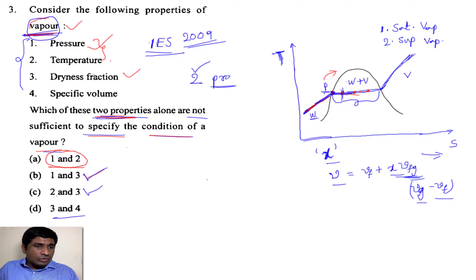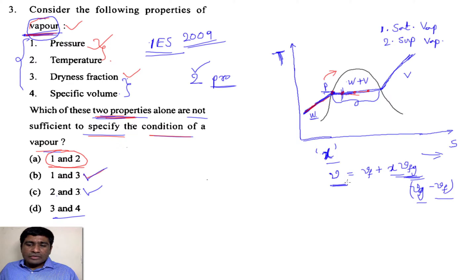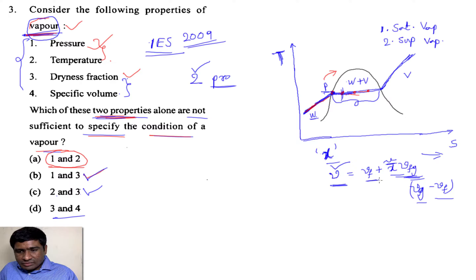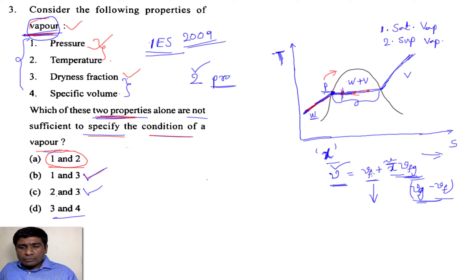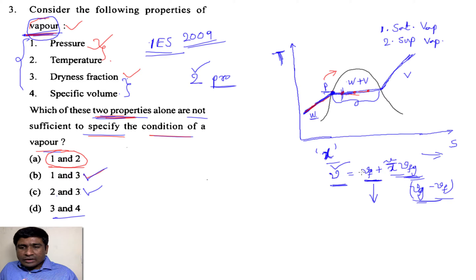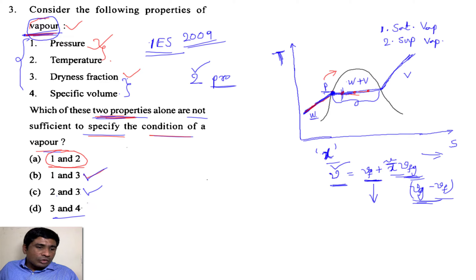What about properties 3 and 4 — dryness fraction and specific volume? If you know these two, can we identify the state? Yes, we can. Because I know V and I know x. From these two values I can find out VF. Substituting, I can also find out VG. And if I know VF — which is the specific volume of the liquid at the saturation point on the dome — then I can go back to the steam tables and identify its position. So by knowing these two parameters also, we are able to find out the state.